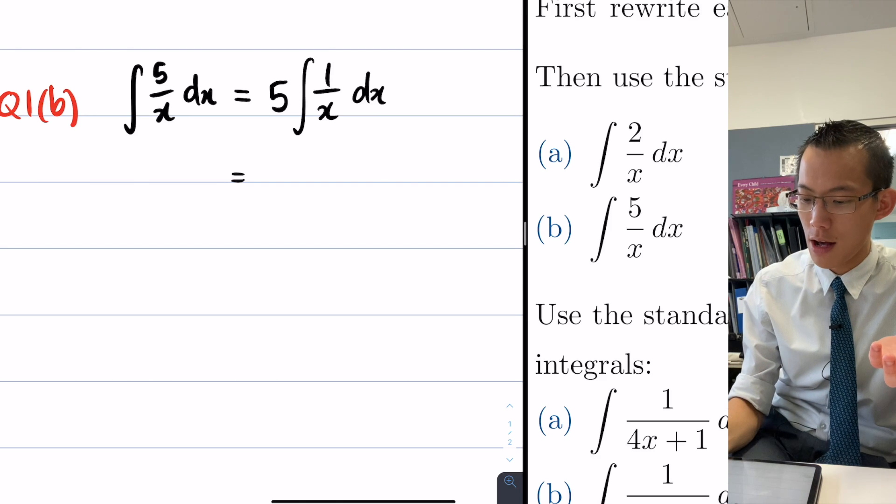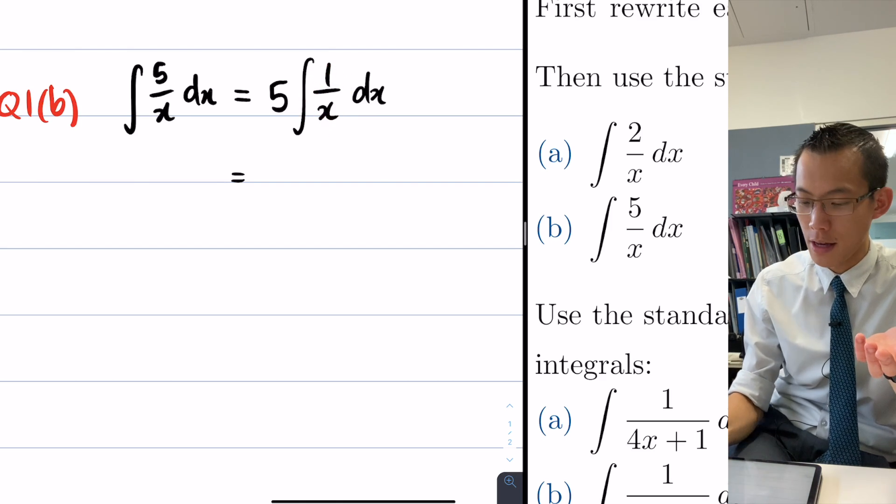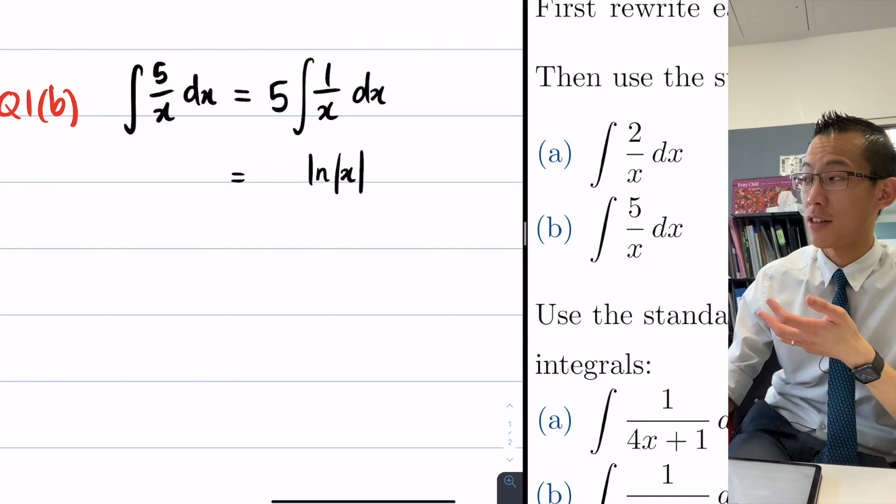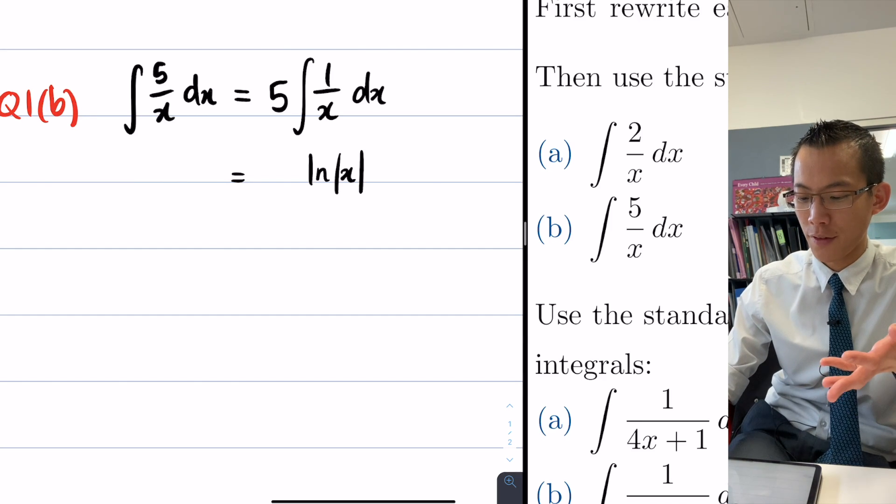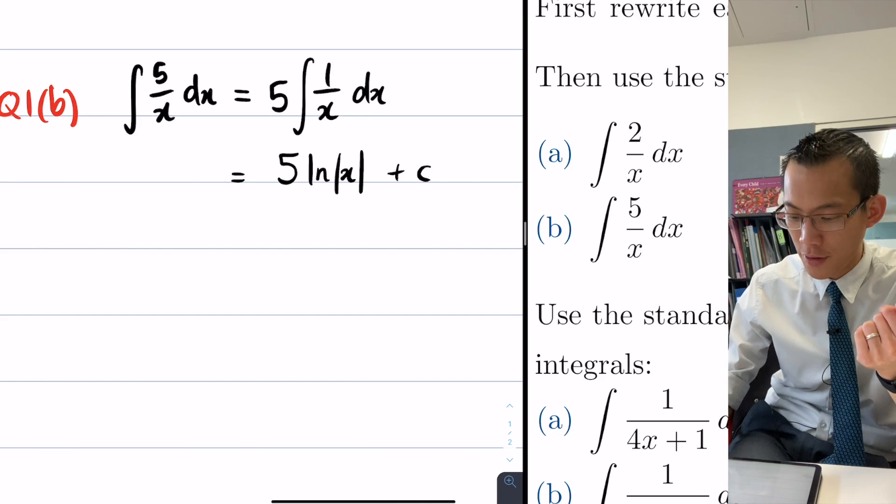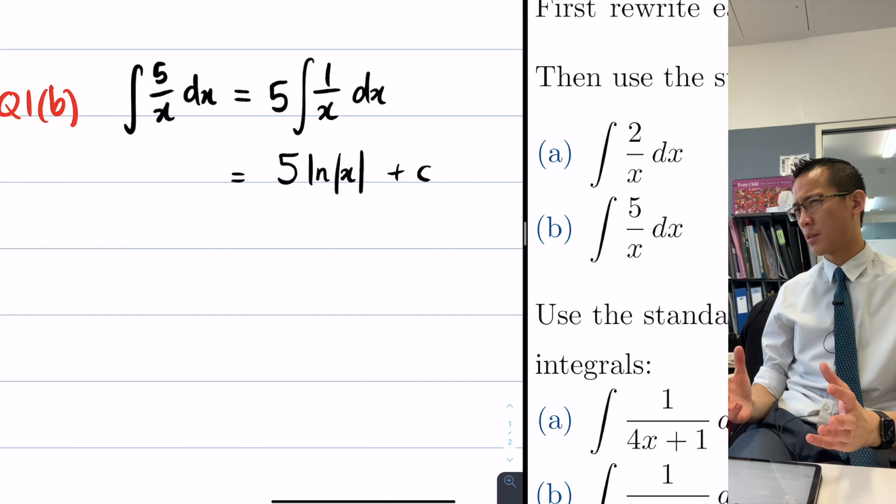So you're like, oh, I know what the primitive of this is. It's that log of the absolute value of x, like we were talking about, but then you're like, oh, well the five was just hanging out the front there, so I best bring that back, right? And then this is indefinite, so I add my constant on. Does that make sense?